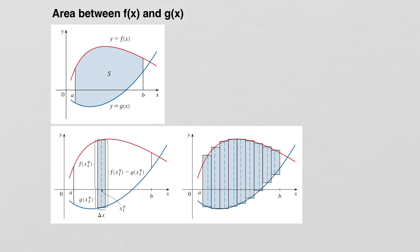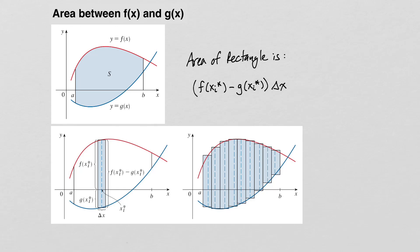Now if you look at this rectangle, to find the area you need to know its height and its width. Its width is delta x. To get its height, we take the y value corresponding to the top point and subtract the y value corresponding to the bottom point — that is, f of xi star minus g of xi star. The area of that rectangle is height times width, and to approximate the total area we add up the areas of all such rectangles.